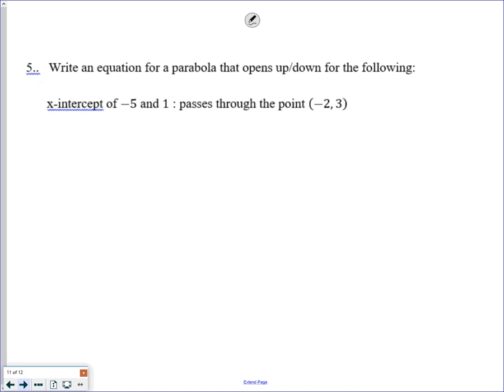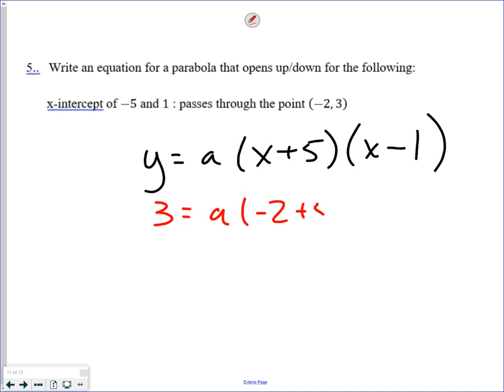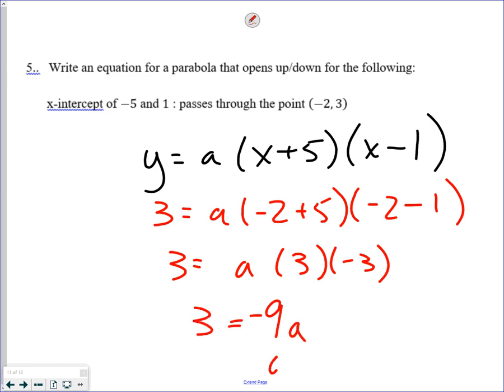Next one. Now, I'm given an x-intercept of negative 5 and 1. And I actually don't like it written that way, but I think that is the way it is written on the test. So, now, I need x plus 5 as an intercept and x minus 1 as an intercept. So, those are the values that would make zeros. Then, I want to plug in my points now. 3 for y. Negative 2 for x. So, now, a, this would be 3, negative 3. So, I get 9a. a would be negative 1 third. So, again, writing it down the side here. y is equal to 1 third x plus 5 x minus 1.